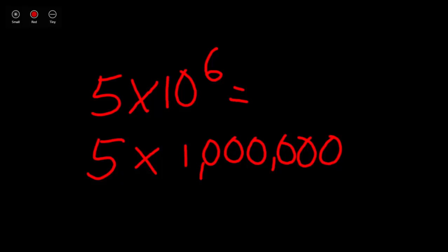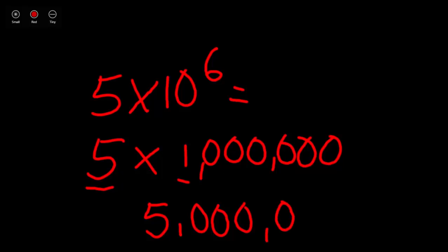Any time we're multiplying two numbers together, if they're a larger number, we can start with the smaller numbers in front to find a simpler way to solve this problem. So we know 5 times 1 is 5, and we carry all of the zeros from the power of 10, which was 1,000,000. So 5 times 1,000,000 equals 5,000,000.